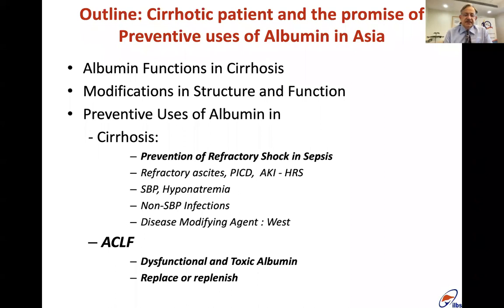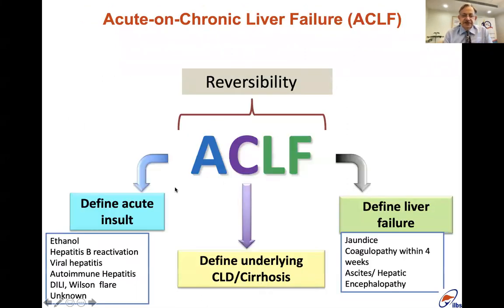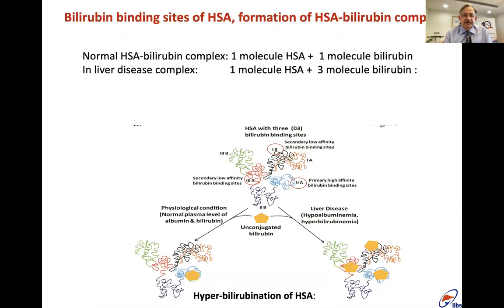I will now discuss dysfunctional and toxic albumin in ACLF and whether we should replace or replenish it. Acute-on-chronic liver failure involves an acute insult — such as continued alcohol use, hepatitis B reactivation, viral hepatitis, autoimmune flare, or drug-induced liver injury — on an underlying chronic liver disease or cirrhosis. This leads to jaundice above bilirubin 5, coagulopathy INR greater than 1.5, acute portal hypertension with ascites, and hepatic encephalopathy.